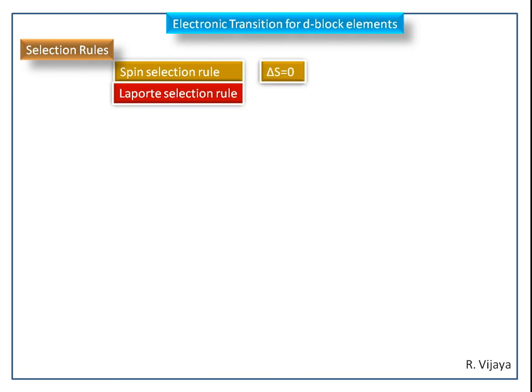The spin selection rule states that when there is a transition, the spin direction should not be changed. If it is changed, the transition is known as a spin forbidden transition.